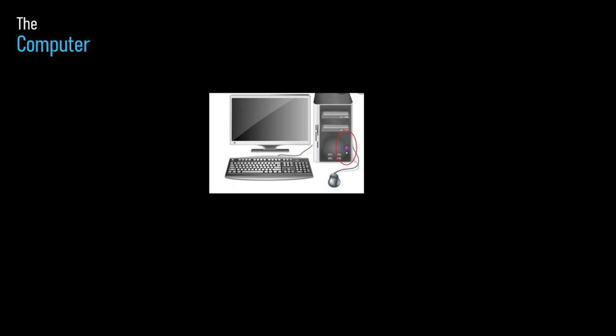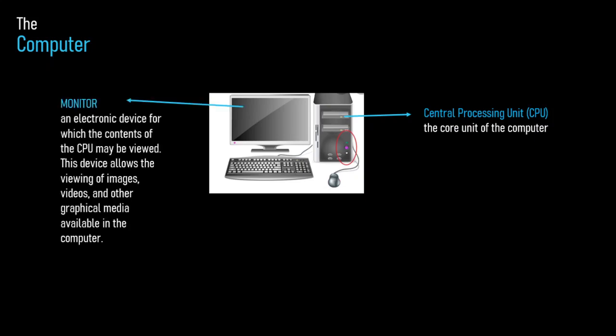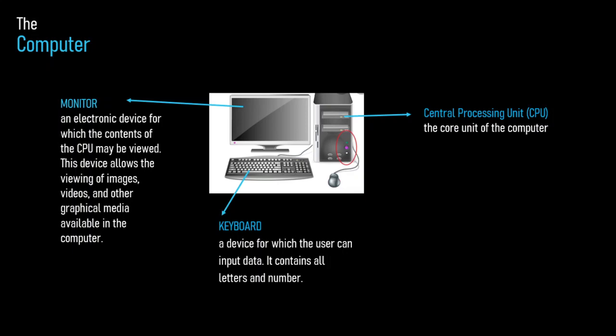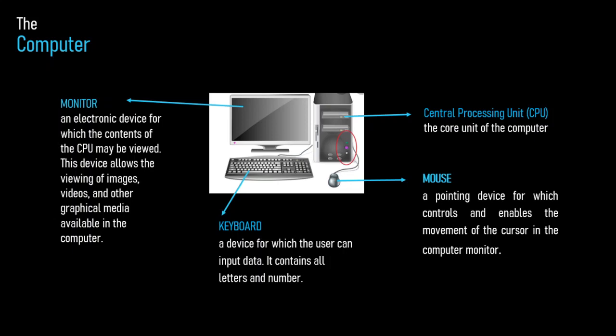Now, as mentioned, we will have a short review on the parts of the computer. First is the Central Processing Unit or CPU — this is the core unit of the computer. Next is the monitor — this is the electronic device through which the contents of the CPU may be viewed, allowing viewing of images, videos, and other graphical media. Then we have the keyboard — the device through which the user inputs data, containing all letters and numbers. Finally, the mouse — a pointing device that controls and enables the movement of the cursor on the computer monitor. You will learn the different roles of these computer parts in drafting soon.